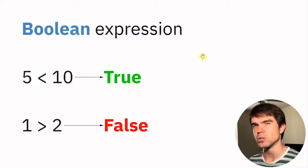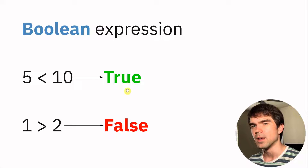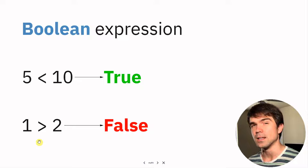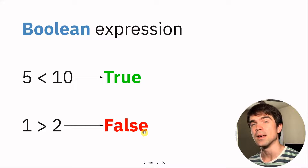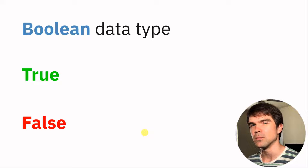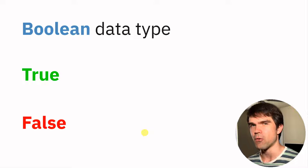A boolean expression is an expression that evaluates to true or false. For example, is 5 less than 10? That is true, so it'll evaluate to true. The next expression — is 1 greater than 2? That's not true, so it's going to be evaluated to false. In Python, to represent the results of a boolean expression, we have the boolean data type, and that data type can only be true or false.